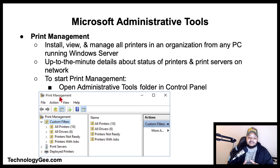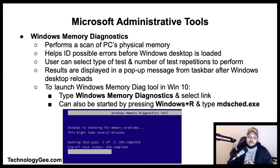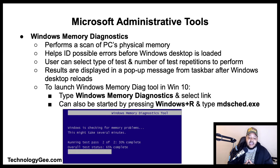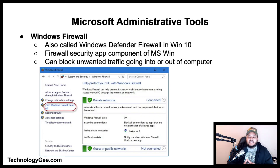The Windows Memory Diagnostics tool performs a scan of your computer's physical memory and helps identify possible errors before the Windows desktop is loaded. The user can select the type of test and number of test repetitions to perform. Results are displayed in a pop-up message from the taskbar after the Windows desktop reloads. To launch it in Windows 10, type Windows Memory Diagnostics and select the link, or press Windows key + R and type mdsched.exe.